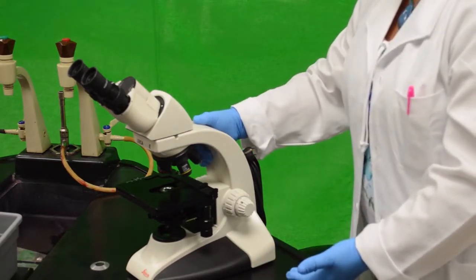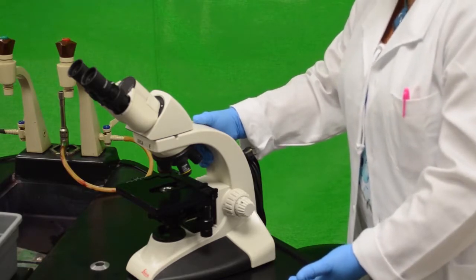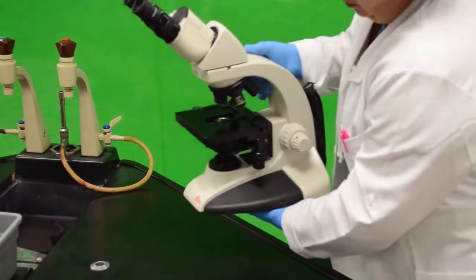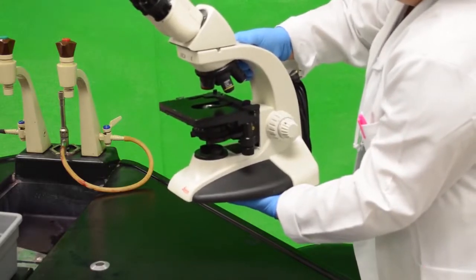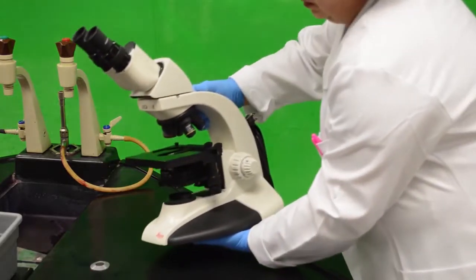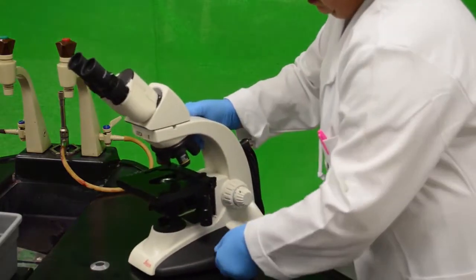The first parts that are visible are the arm and the base. These are important as you carry the microscope holding on to these with two hands. One on the arm and one on the base.